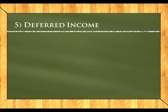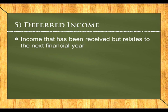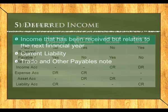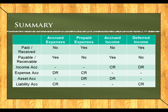Deferred income, also called income received in advance, is income already received this year that relates to the next financial year. If we closed business now we would owe that money back, so we create a current liability called deferred income affecting trade and other payables. For example, if a tenant paid one month's rent in advance, you debit rent income and credit the deferred income liability.